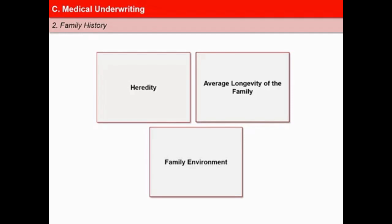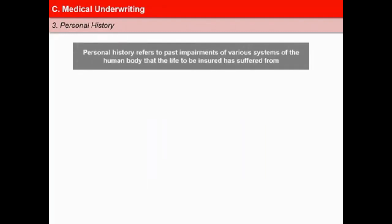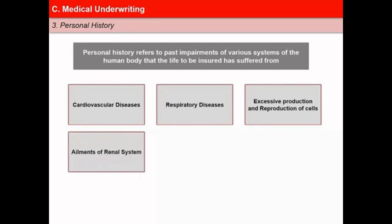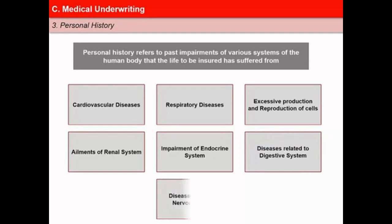Personal history refers to past impairments of various systems of the human body which the life to be insured has suffered from. The proposal form for life insurance typically contains questions inquiring whether the life to be insured has been under treatment for any killing diseases. The major kinds include cardiovascular diseases, respiratory system diseases like tuberculosis, excessive production and reproduction of cells, ailments of the renal system including the kidney and other urinary parts, impairments of the endocrine system like diabetes, diseases of the digestive system, and diseases of the nervous system.